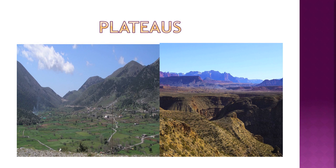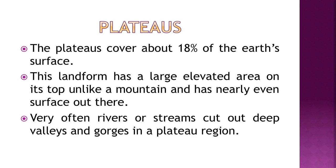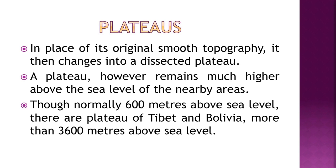The second type of landforms are plateaus, which cover about 18 percent of the earth's surface. Plateaus have a large elevated area on top, unlike a mountain, with a nearly even surface. Very often, rivers or streams cut out deep valleys and gorges in a plateau region, changing its original smooth topography into a dissected plateau.